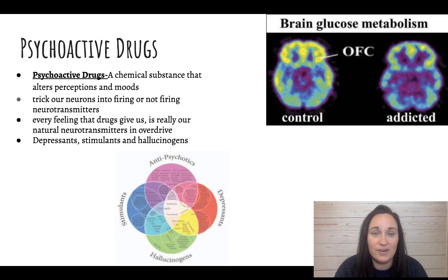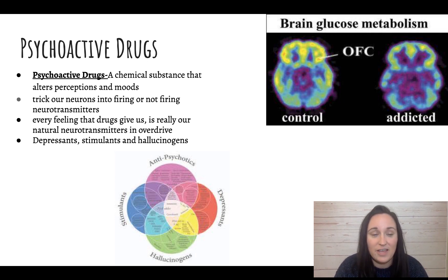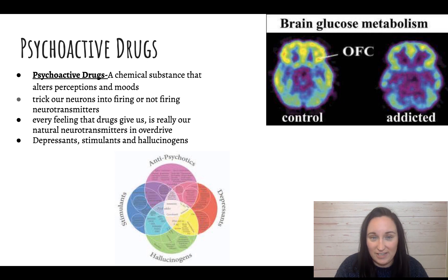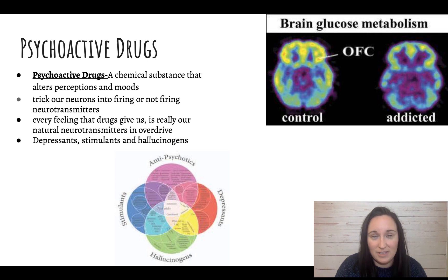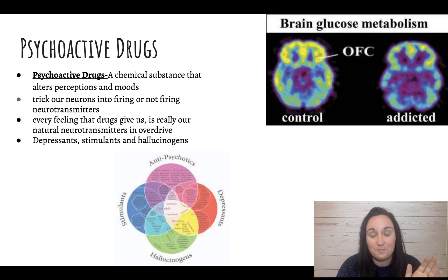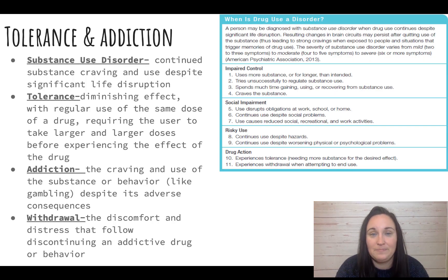There are three categories of drugs you need to know: depressants, stimulants, and hallucinogens. If a neurotransmitter related to a drug is listed in the slides, you should know it; if it isn't mentioned, you don't have to know it. Some of these drugs come up more than others, so just be aware.